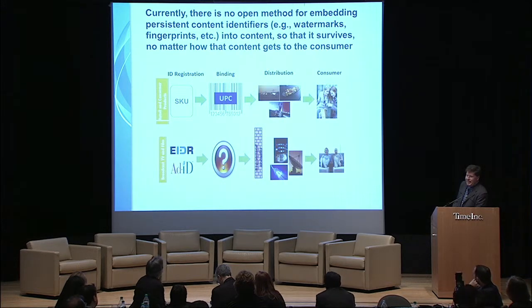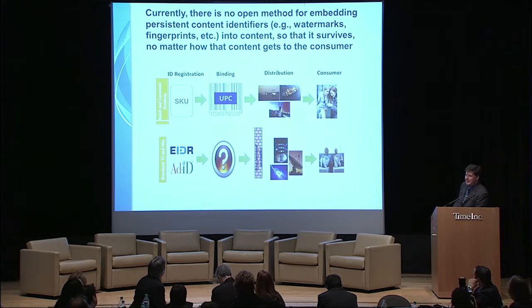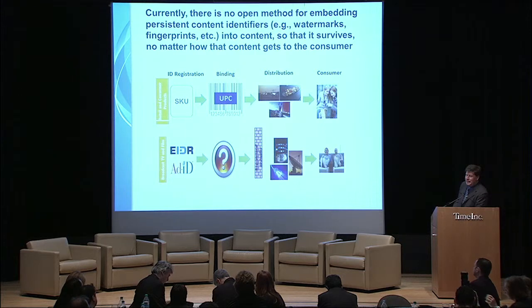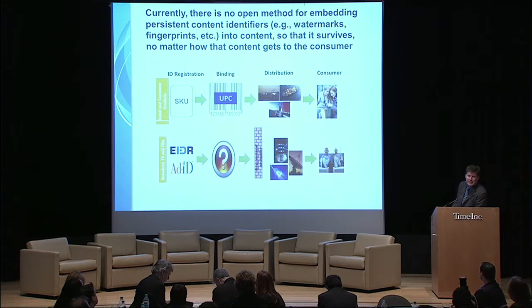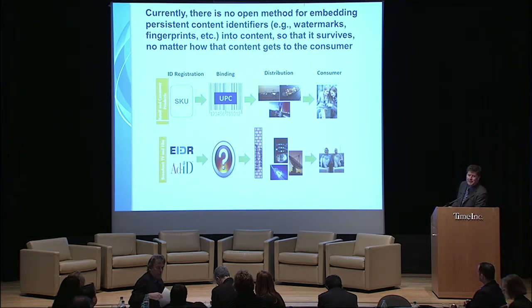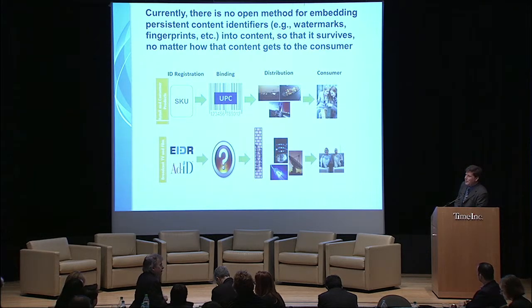Other industries have figured this out, and perhaps embarrassingly we haven't yet. When you've got businesses that deal with hard goods, they've got SKUs that identify what they're selling. They've got UPC codes or RFIDs — ways of embedding those SKUs with the products such that they survive distribution and get down to consumers. A lot of industries have this figured out. In our industry, we're in the process of figuring that out.